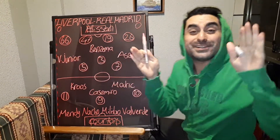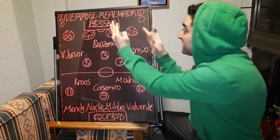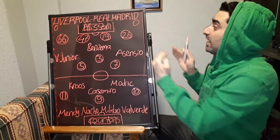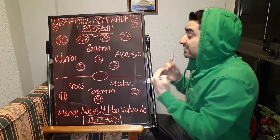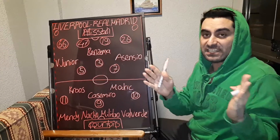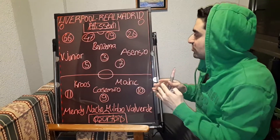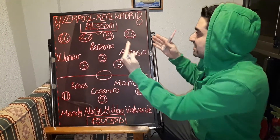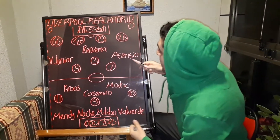I want to talk about the tactics and analysis of this game. Both Liverpool and Real Madrid played in the same formation, 4-3-3 — Zinedine Zidane's and Jurgen Klopp's formations. Let's start with all the tactics of this game.